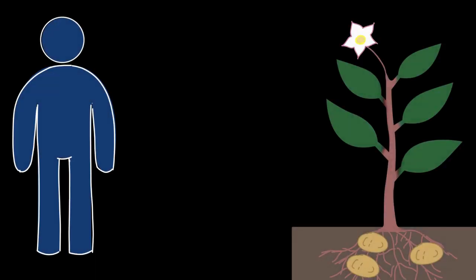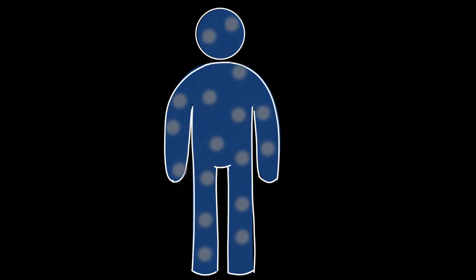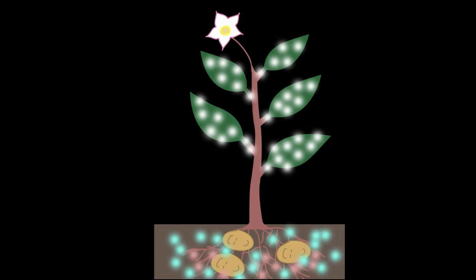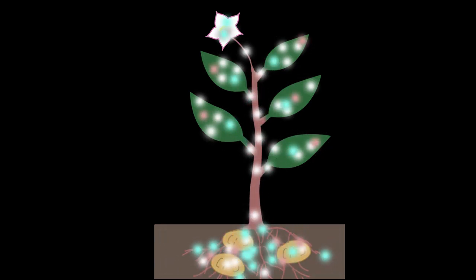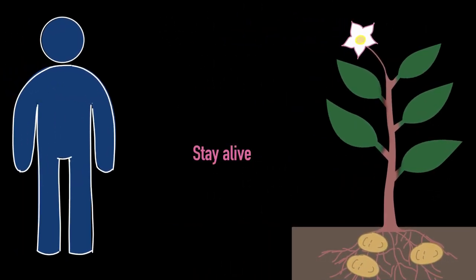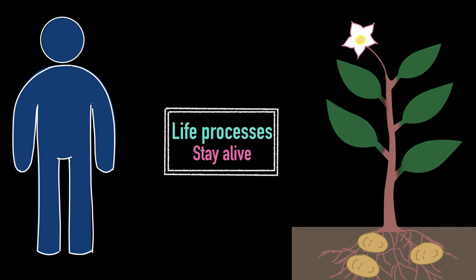In order for living things like you, me, and this plant to stay alive, we need to keep on carrying out certain processes on a regular basis. These processes that we need to keep doing to stay alive, we give a name to them — we call them life processes. In this video, we will learn what are the major life processes that all living things need to carry out to stay alive.